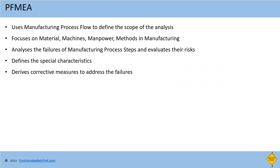PFMEA, or process FMEA, is a FMEA done on the manufacturing process. It is a risk assessment method to evaluate the potential failures of the manufacturing process. AIAG VDA standard explains the steps, severity, occurrence, and detection rating in detail. PFMEA uses the manufacturing process flow to define the scope of the analysis, and focuses on material, machine, manpower, and methods in manufacturing. It analyzes the failures of manufacturing process steps and evaluates their risks.